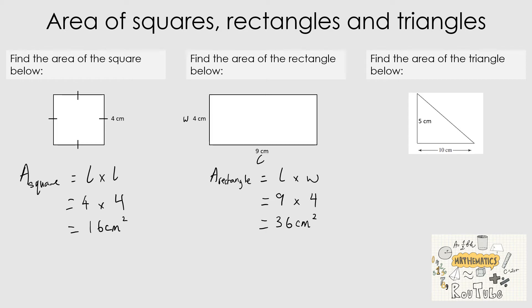The third example is to find the area of the triangle. Let's write the formula first: area of a triangle equals one half multiplied by the base multiplied by the height. I prefer this form, but base times height over 2 works exactly the same. The height is the measurement from top to bottom, which is 5 centimeters, and the base is 10 centimeters.